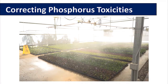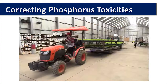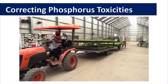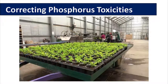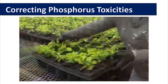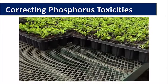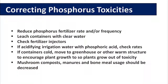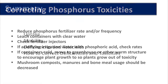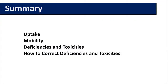If excess phosphorus from acidification is an issue, you will need to consider another acidification source. If the containers are cold, move them to a greenhouse or another warm structure to encourage plant growth — sometimes the plants will grow out of the toxicity symptoms. If your production program includes substrates such as mushroom compost, manures, and bone meals, analyze these for phosphorus content. This is what we learned in this module.